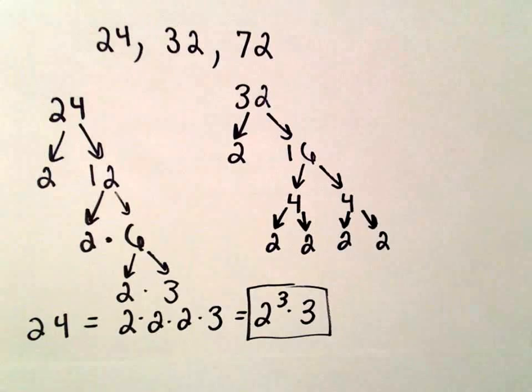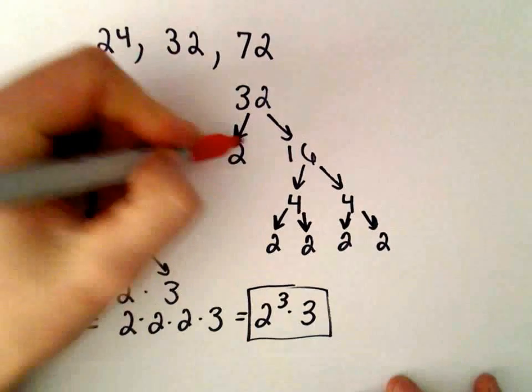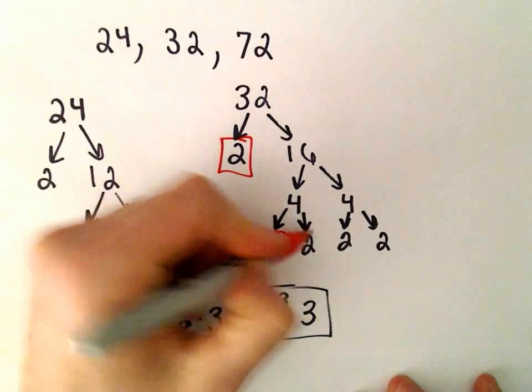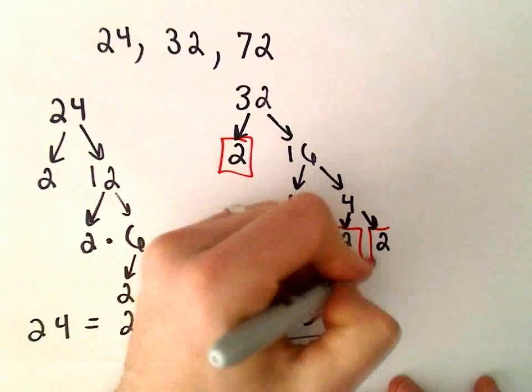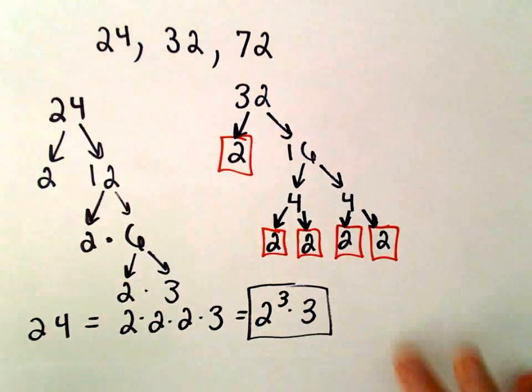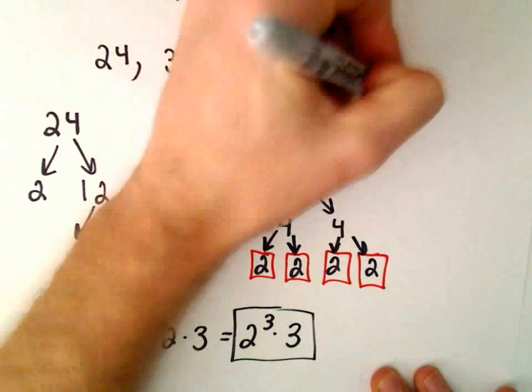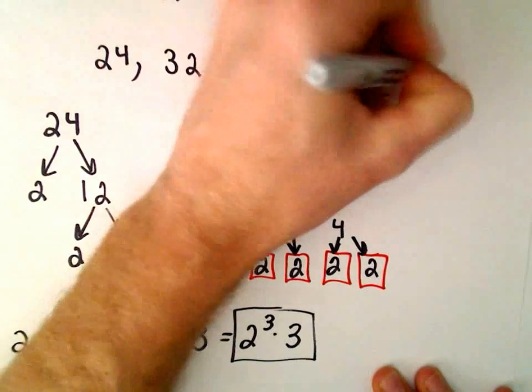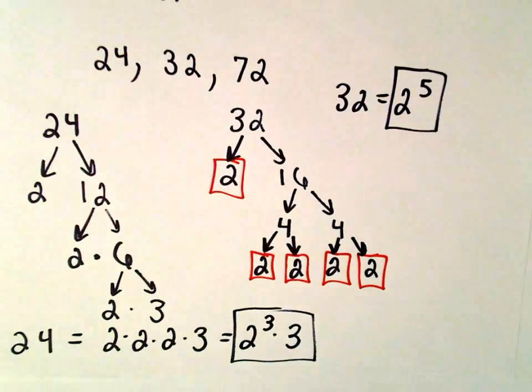So now if I take the bottom of each little branch here, I would have 2 times 2 times 2 times 2, or 2 to the fifth. So 32 is 2 to the fifth power. We'll remember that as well.